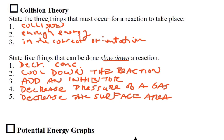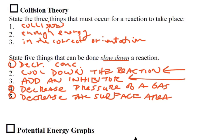Those things link to the ones on top. Collisions — if we decrease the concentration, decrease the pressure, or decrease the surface area, those are all involving collisions. If we cool down the reaction, that's involving the energy. And if we add an inhibitor, that's talking about the correct orientation.